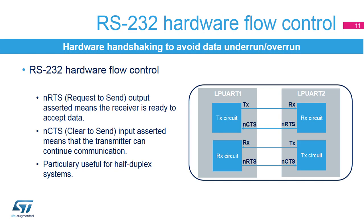In the RS-232 standard, it's possible to control the serial data flow between two devices by using the N-CTS input and the N-RTS input. These two lines allow the receiver and the transmitter to alert each other of their state. This slide shows how to connect two devices in this mode. The idea is to prevent dropped bytes or conflicts in case of half-duplex communication. Both signals are active low.